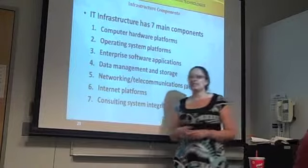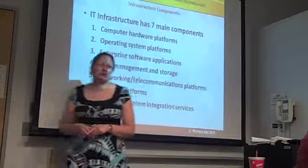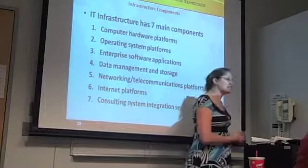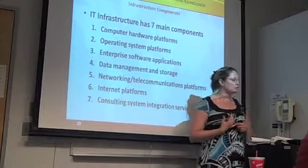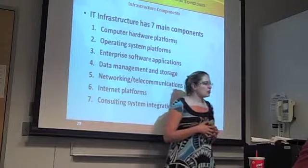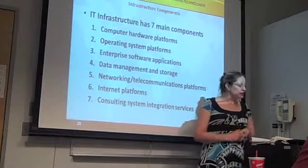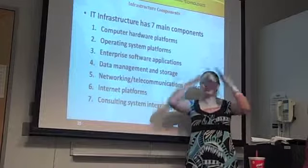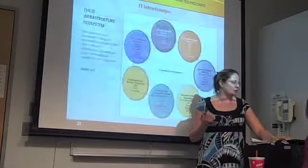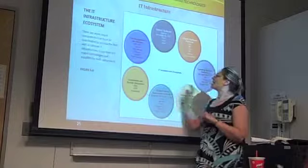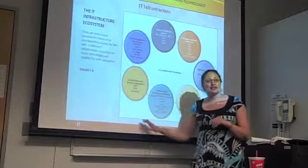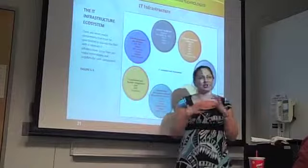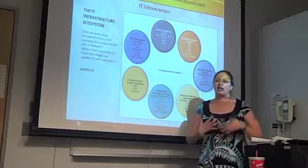Any IT infrastructure has seven major components: computer hardware platforms, operating system platforms, enterprise software platforms, data management and storage, networking and communication platforms, internet platforms, and consulting and system integration services. These all have to be present and work together as an IT infrastructure ecosystem.